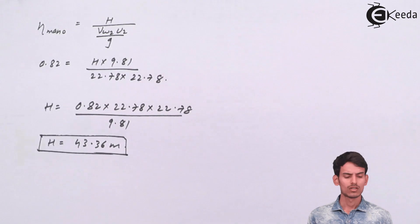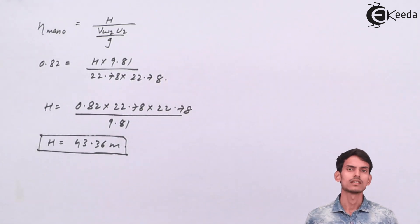So once you simplify this question, once you substitute the values and modify and shift the terms here and there, you will get the value of H. That is the head that is developed by the impeller. It comes out to 43.36 meters. So that was all about this question. I hope you have understood this. Thank you.